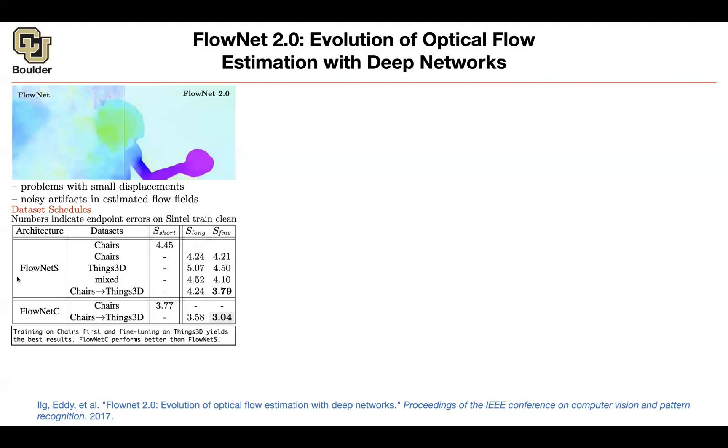The architecture that I just showed you is FlowNet S. It is trained on the chairs, flying chairs data, and it is trained for a short period of time. And that's giving you this endpoint error. And here the lower is better. If you train on chairs but you train for longer, things are actually going to improve.